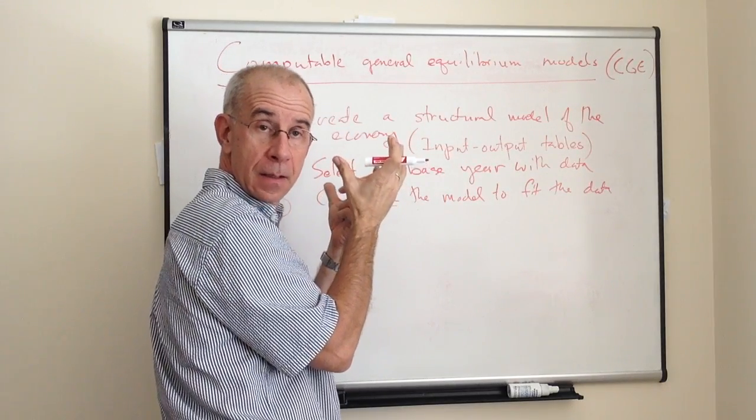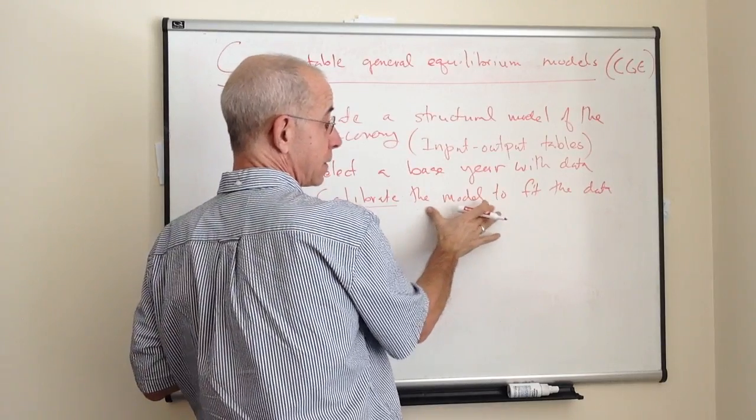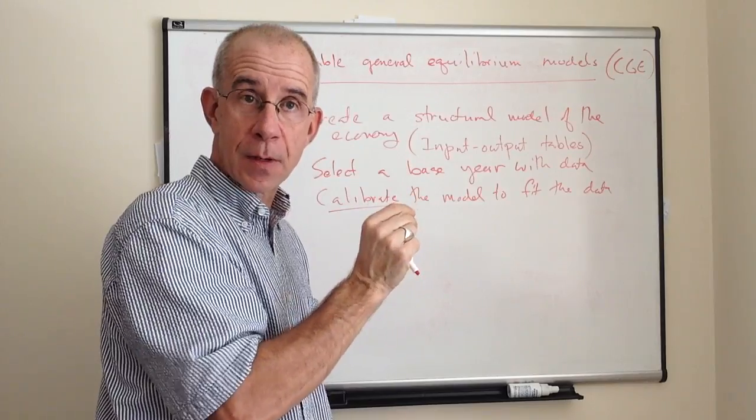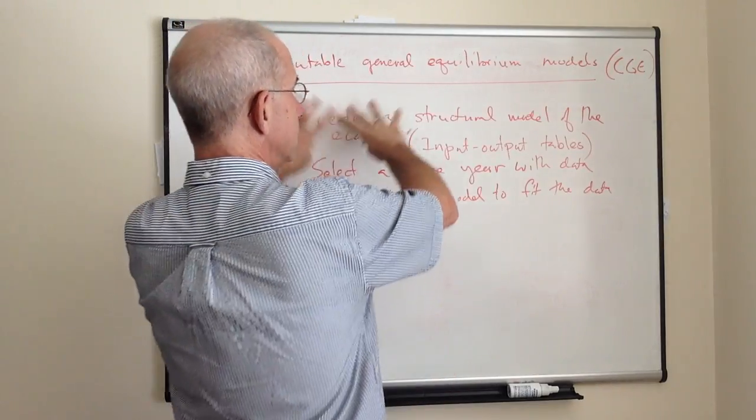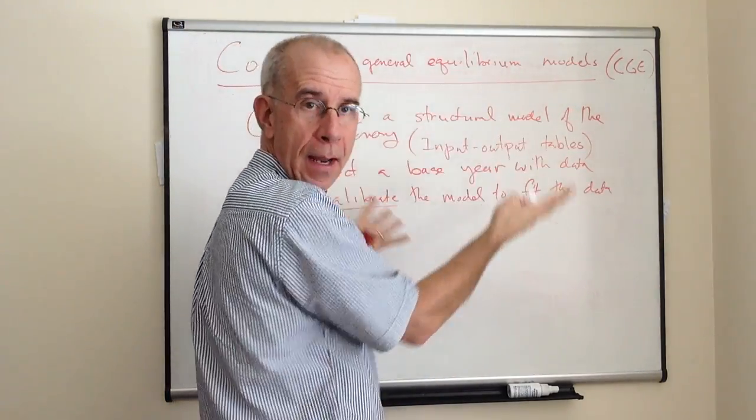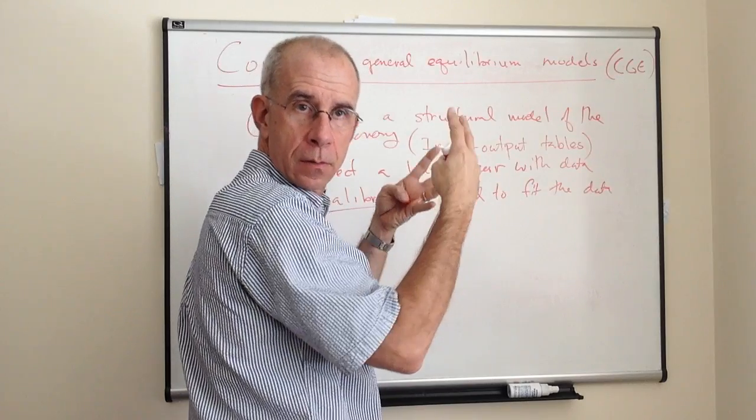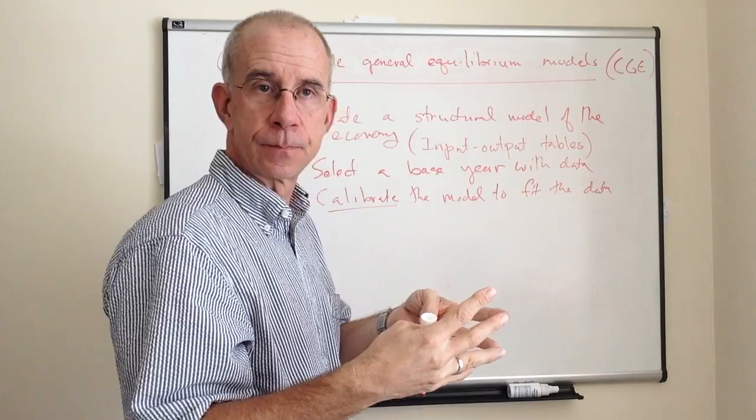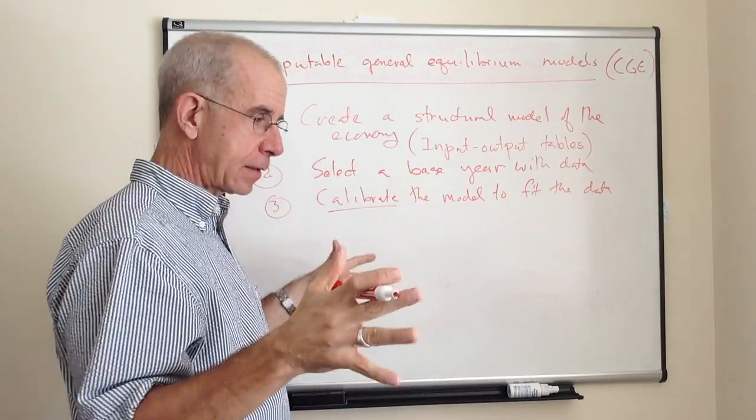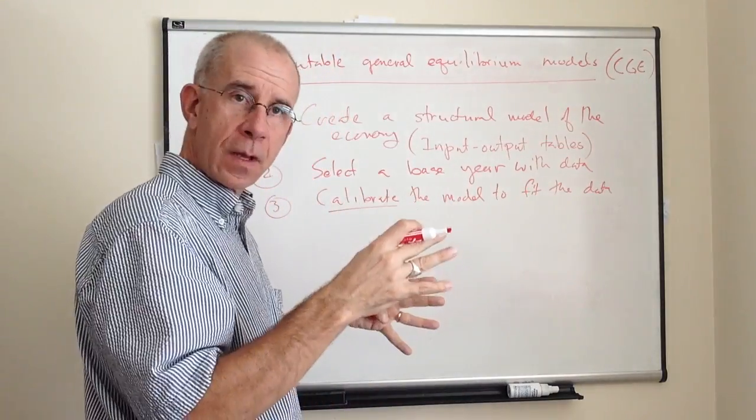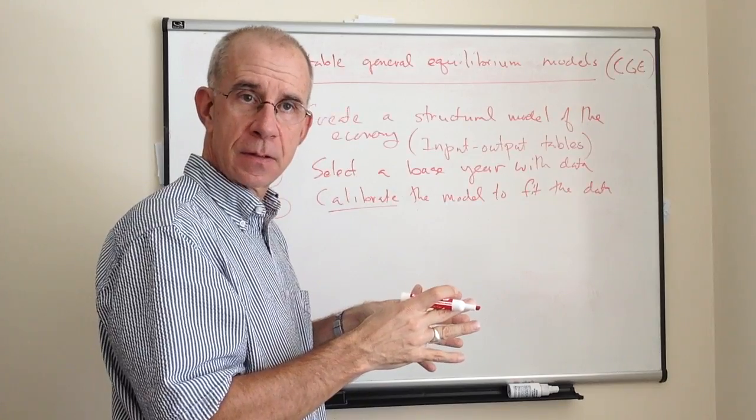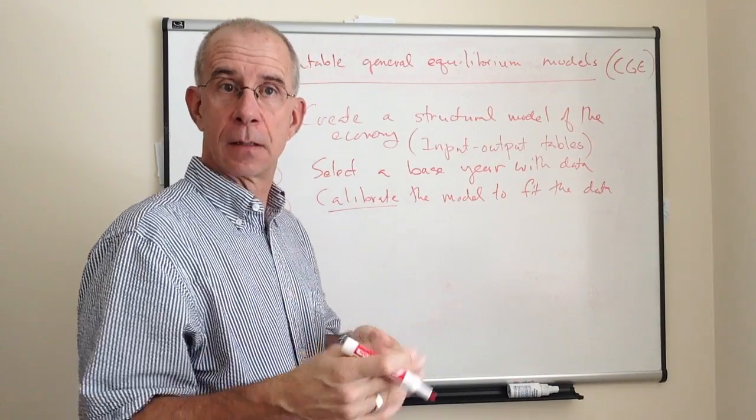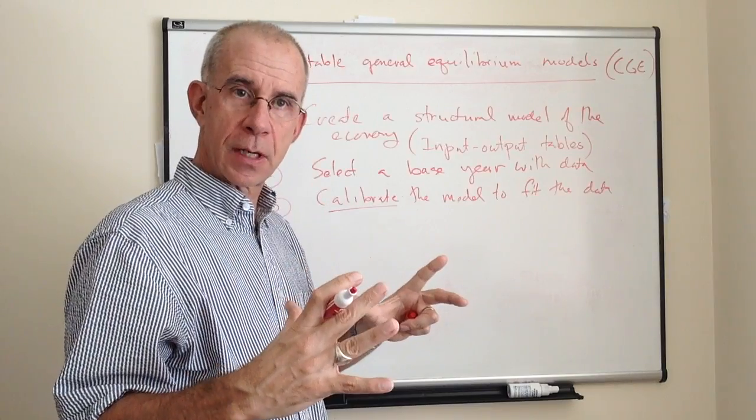That's then used with the structural model and the data to calibrate the model. This calibration effort is essentially to find the value of other parameters that would recreate the whole base year economic snapshot. Here you've got this model of the economy, all these different relationships. Data fits, the model and the parameters fit the data. That's your calibration exercise.